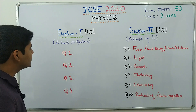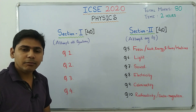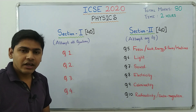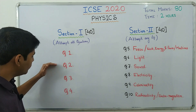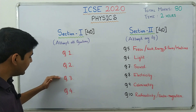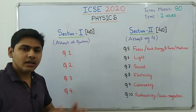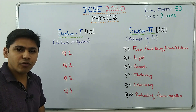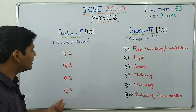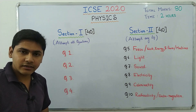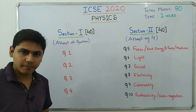Section 1 is 40 marks. This is a compulsory section and you will have to attempt all questions. You will get four questions — Question 1, 2, 3, and 4 — each of 10 marks, giving you 40 marks total. In Section 1 there is no chapter combination; questions are asked from all chapters jumbled up.